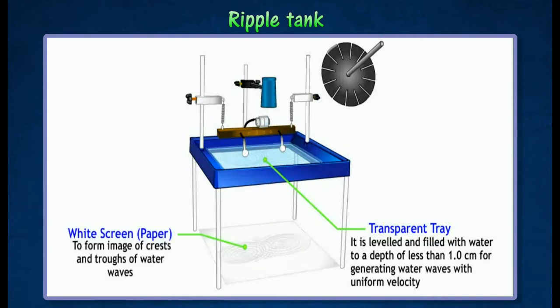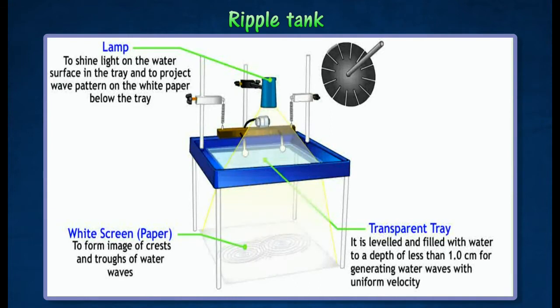White screen is used to form image of crests and troughs of water waves. Lamp is used to shine on the water surface in the tray and to project wave pattern on a white screen below the tray.